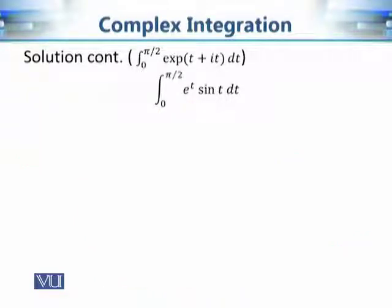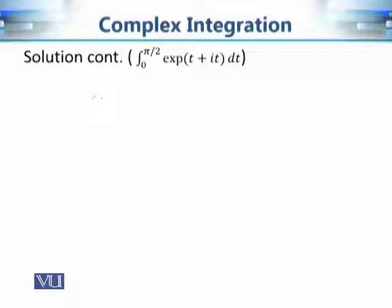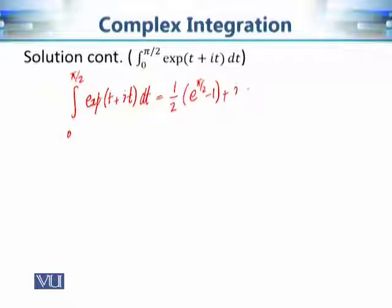Moving on to the second real integral: as noted, this is left as an exercise. If you evaluate it, you find that the integral of e^t · sin t from 0 to π/2 equals (1/2)(e^(π/2) + 1). Using both values, the full complex integral from 0 to π/2 of e^(t + i·t) dt equals (1/2)(e^(π/2) − 1) + i·(1/2)(e^(π/2) + 1). That's how we evaluate this complex integral of a complex function of one variable over the real interval 0 to π/2.